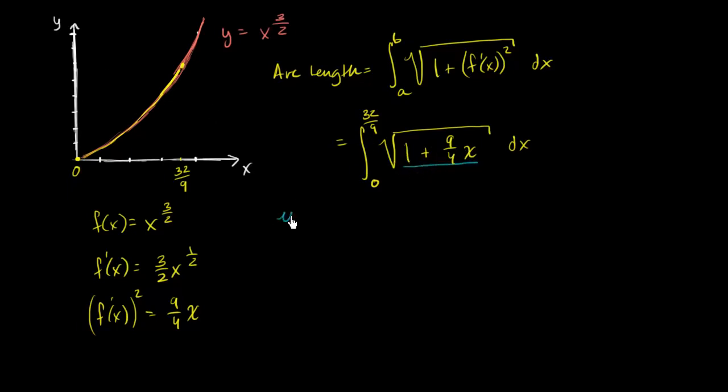So if I say u is equal to one plus nine over four x, then we know, du dx is going to be equal to nine fourths. Or we could say du is equal to nine fourths dx.